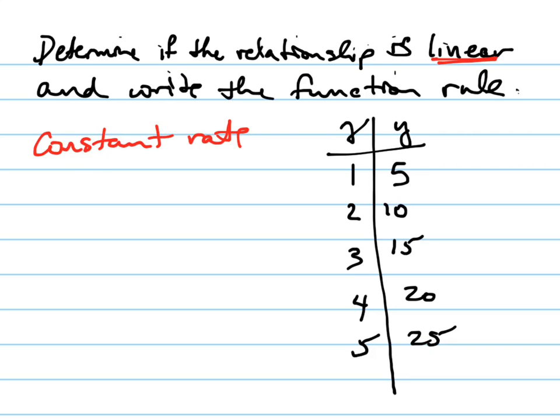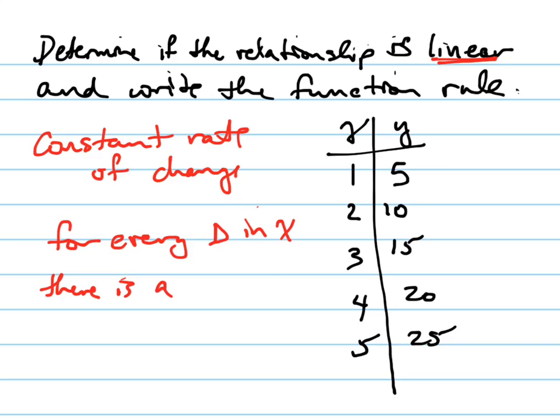Constant rate of change. That means for every change—that triangle means change—in x, there is a consistent change in y.